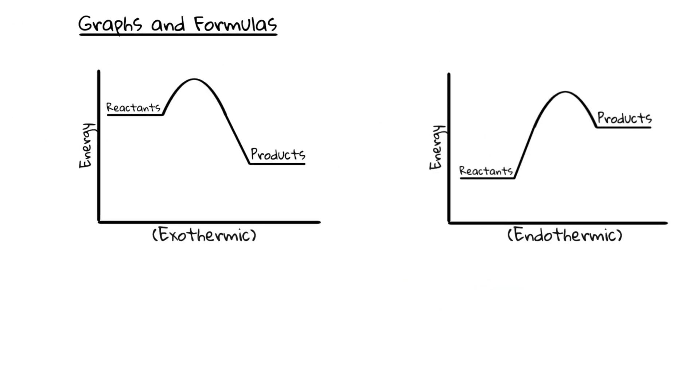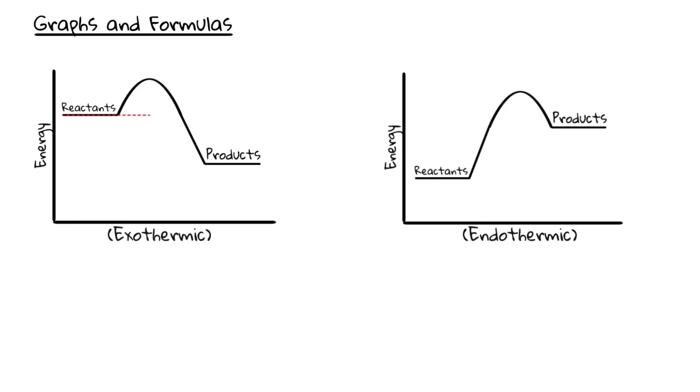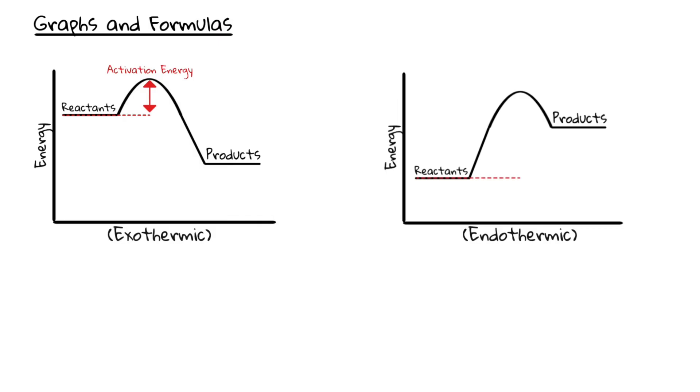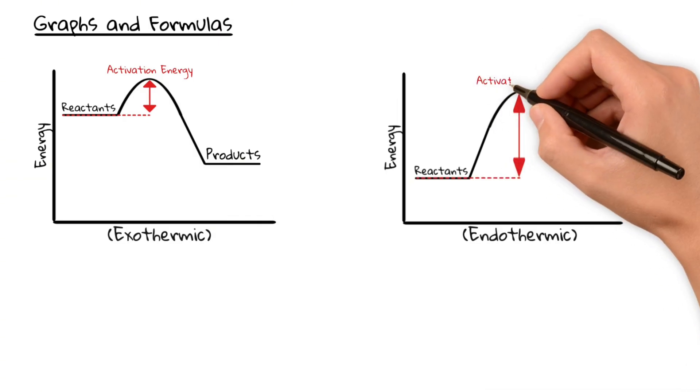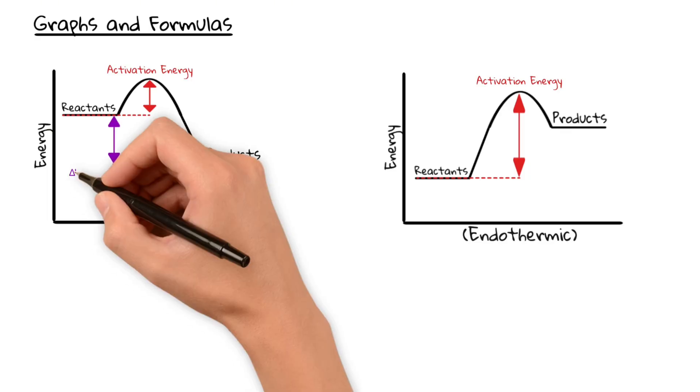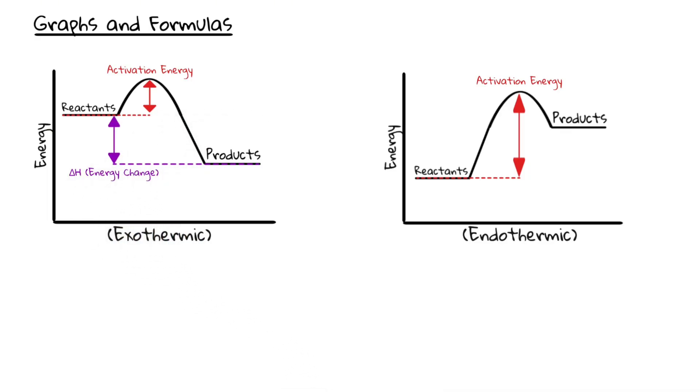On an energy diagram, we can label two important things. Firstly, the activation energy, which is always drawn from the reactants to the very peak. And secondly, the energy change, delta H, also called the enthalpy change. This is always drawn from the reactants to the products.